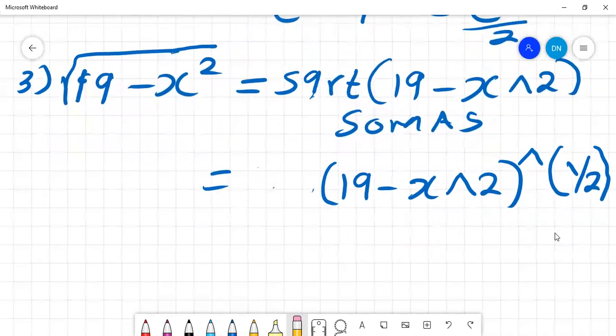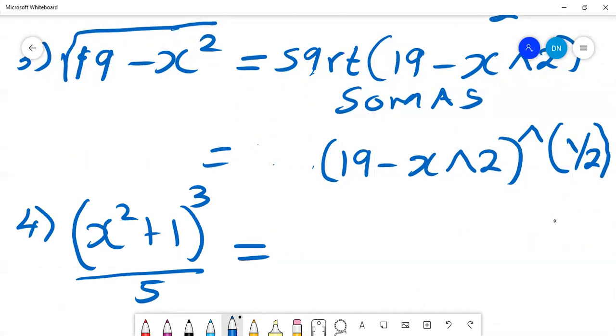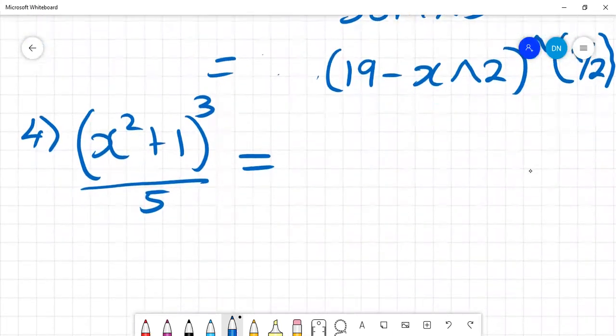These are some of the ways of writing these equations. Once you get familiar with SOMAS, it's not so technical. If I have an equation like (x^2 + 1) to power 3/5, how do I write that in SOMAS? I'll just put x to power 2, then I say plus 1 to power 3, and then I say divide 5.